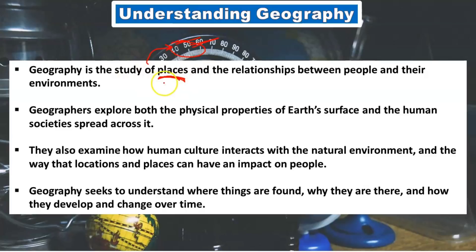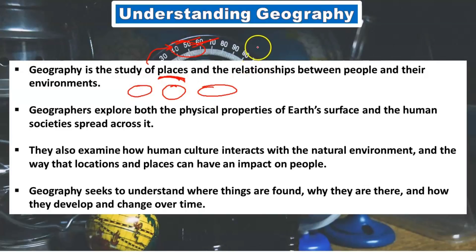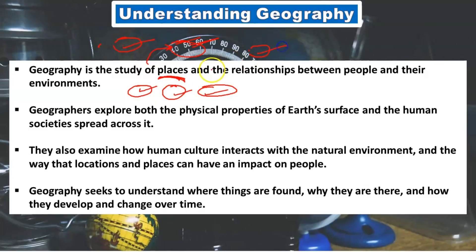Let me give you guys an example. Let's say you go to any city, you visit any river, you go to any pond, you go to a hill, you go to a plateau. Now the first question is where have they originated from? Plateaus, mountains, rivers, valleys — how have all of these been formed?